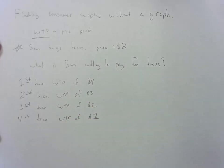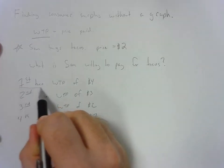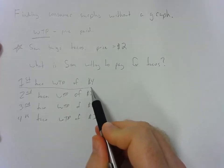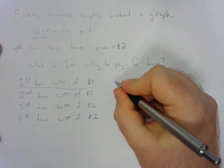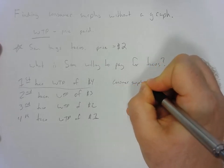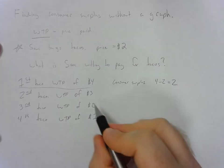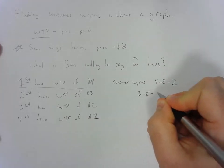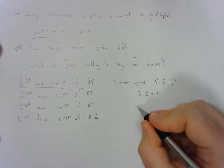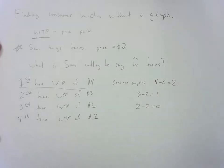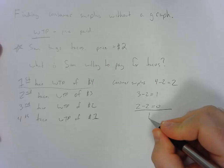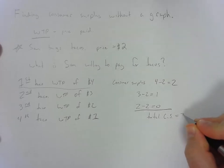The trick is to first find the equilibrium of how many tacos Sam will consume. For the first taco, willingness to pay is $4 and she only pays $2 — consumer surplus is $4 minus $2, or $2. For the second taco, it's $3 minus $2, or $1. For the third taco, it's $2 minus $2, equaling $0. So the total consumer surplus for Sam is $3.